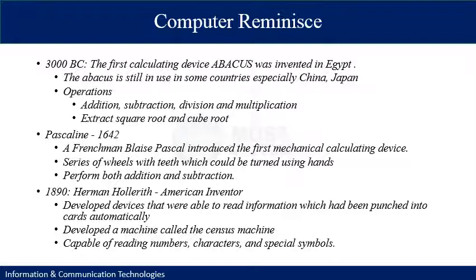Then there was a major development in the calculating device which dates back to the 17th century. The first calculating device was named the Pascaline and it was invented in 1642. A Frenchman, Blaise Pascal, introduced this first mechanical calculating device. It had a series of wheels with teeth which could be turned by hand, and it helped to perform both addition and subtraction.